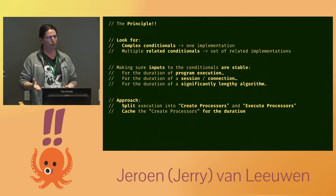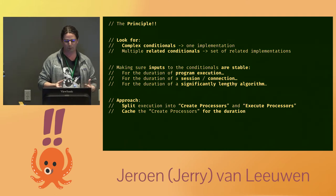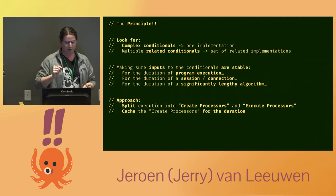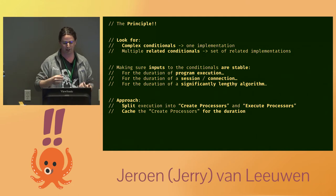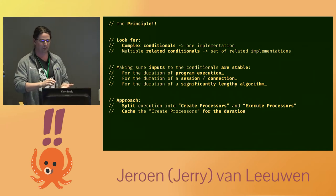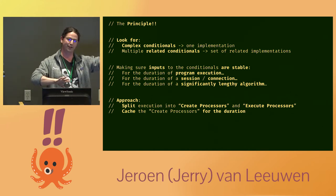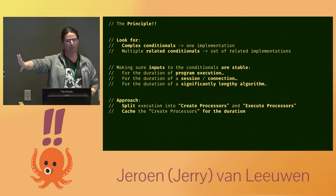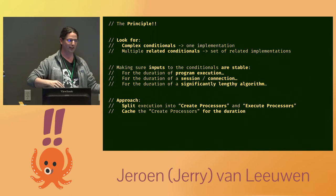The principle is more broadly applicable than just serialization. The idea is to look for complex conditionals or wild trees of conditionals in your loops — specifically, conditionals that are dependent on inputs that are stable over the execution, whether that's the duration of program execution, a TCP session, or a significantly lengthy algorithm. What you do is split those decisions into a create-processor step and an execute-processor step, cache all the create-processor results, and then do all the decisions exactly once.